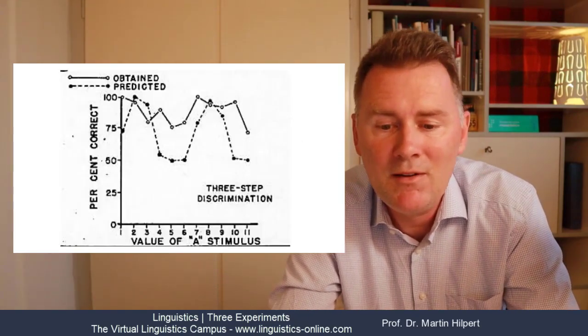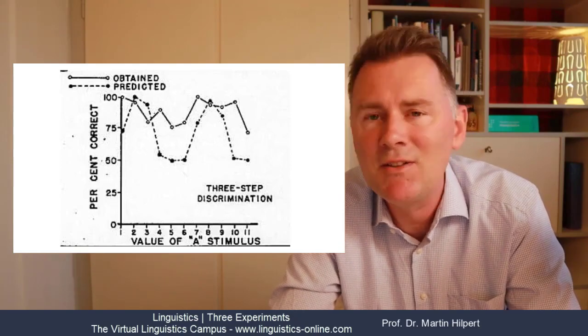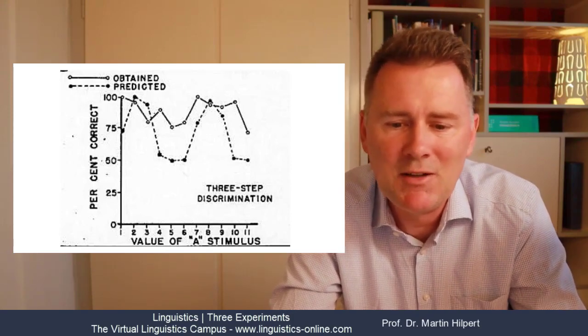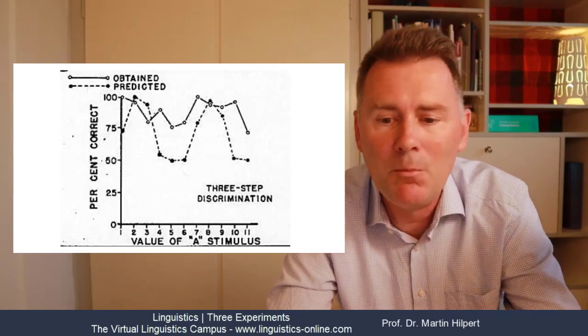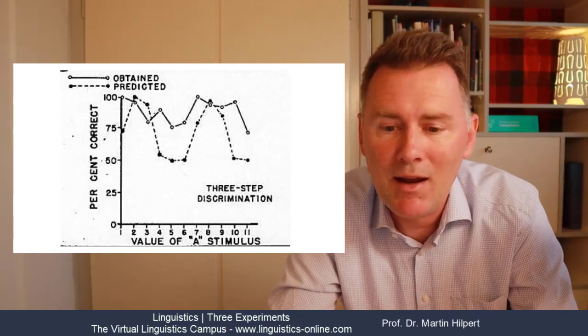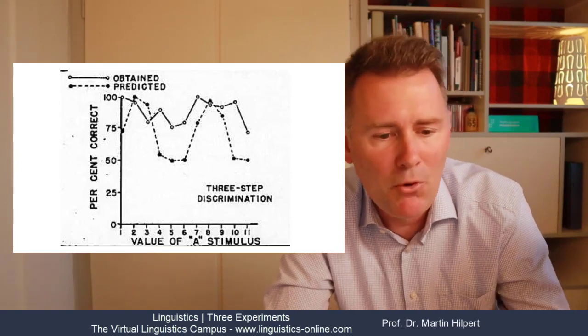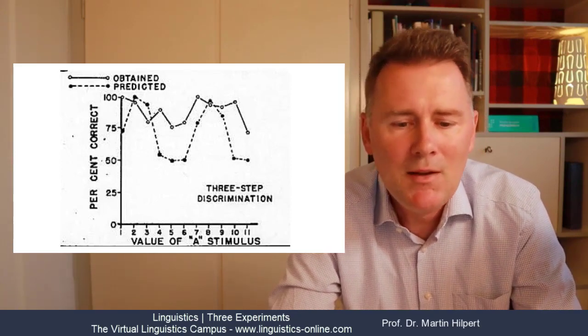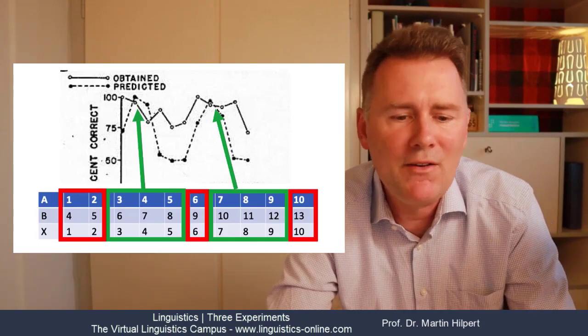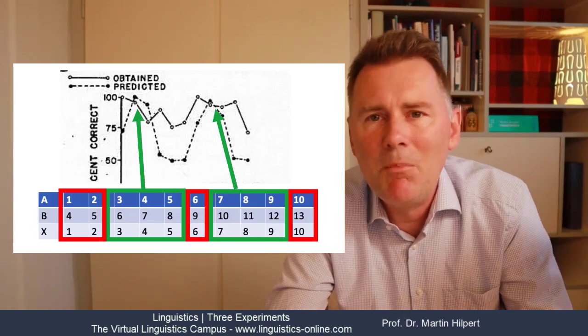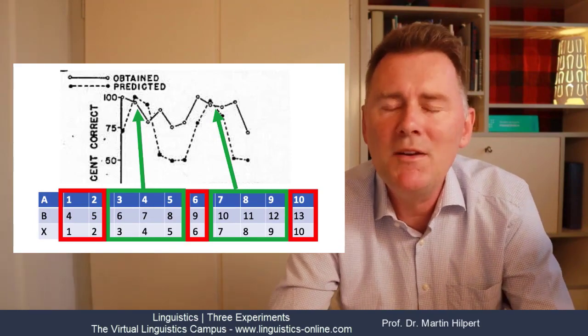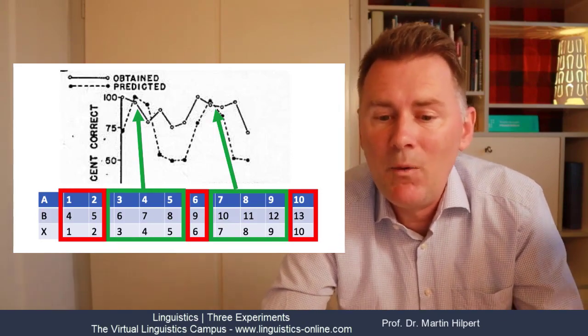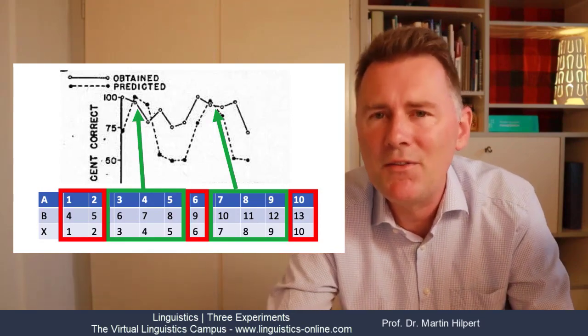So the y-axis shows how accurately the participants identified the X sound as either A or B. Points high up mean that most answers were correct and points that are lower indicate that participants were often unable to distinguish between A and B. The observations are not as drastic as the predictions but they are actually in line with them. So combinations are easier when they reach across phoneme boundaries and they're harder to distinguish when the participants have to hear variants of the same phoneme.